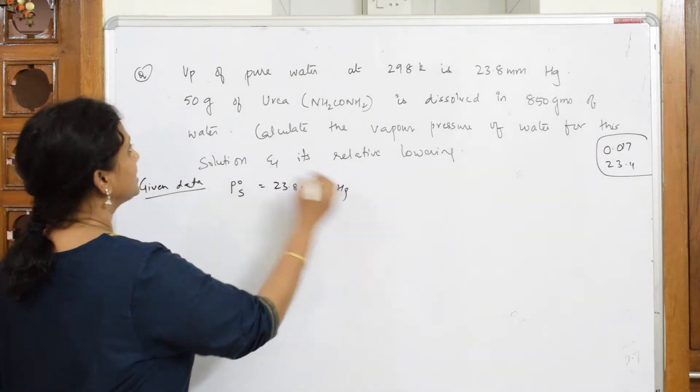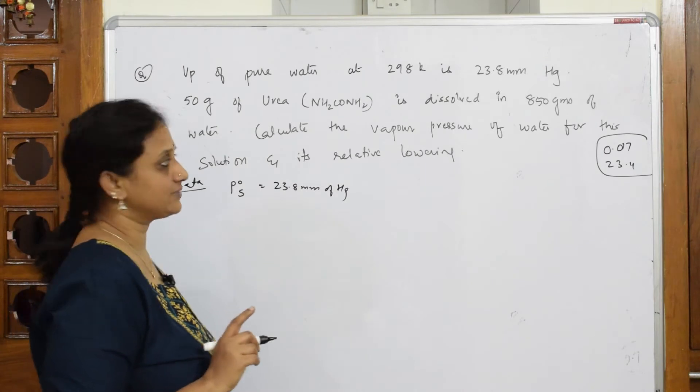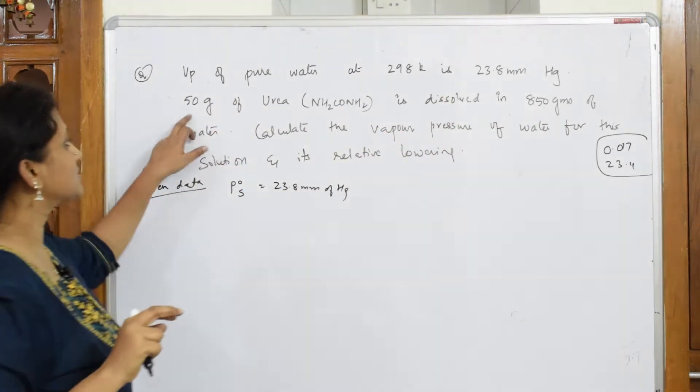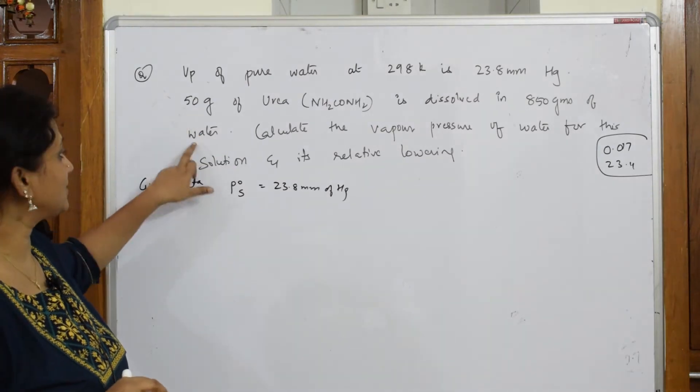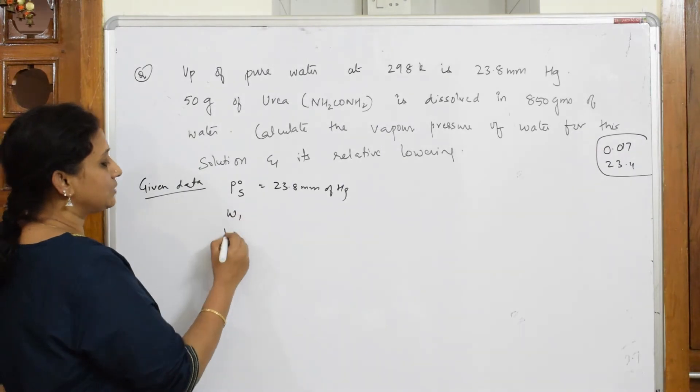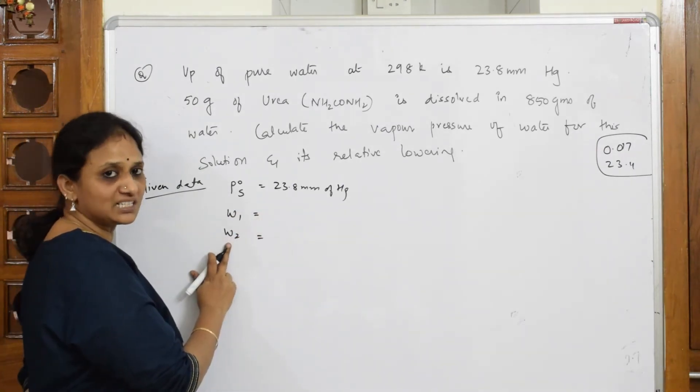Let us come back. Then 50 grams of urea - the solute weight is given to us - is dissolved in 850 grams of water. Because this is lesser quantity, that's the solute, and this is larger quantity, that is your solvent.